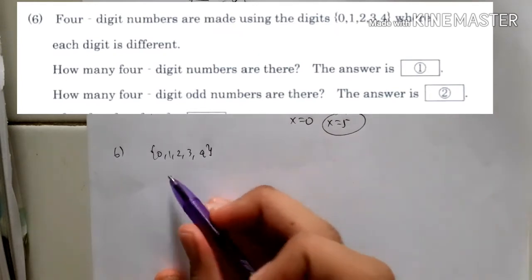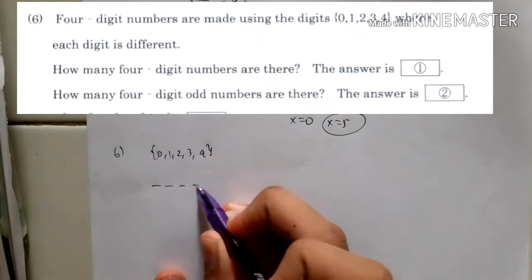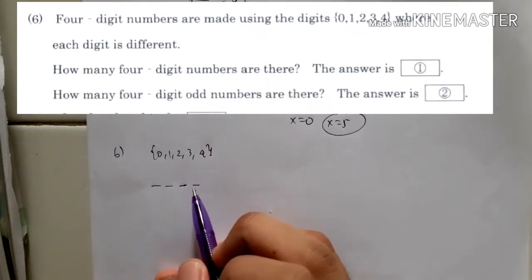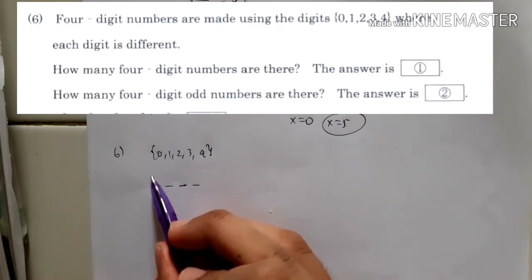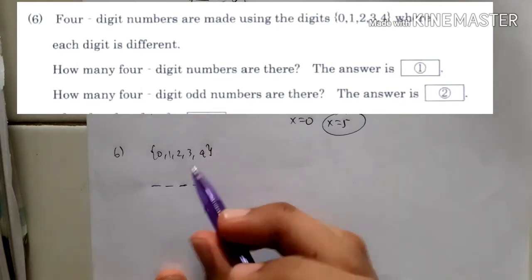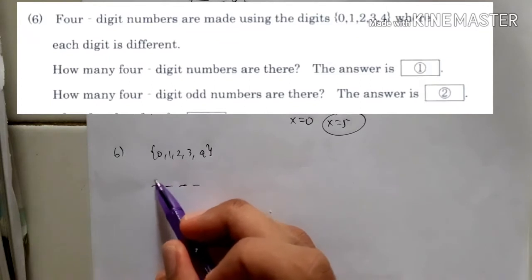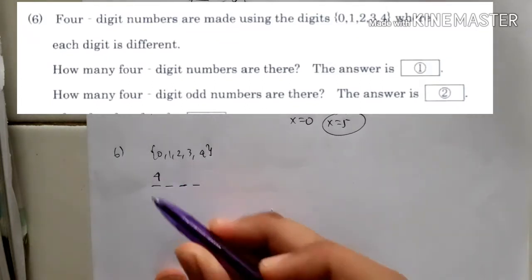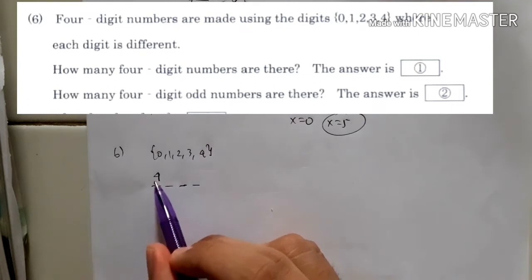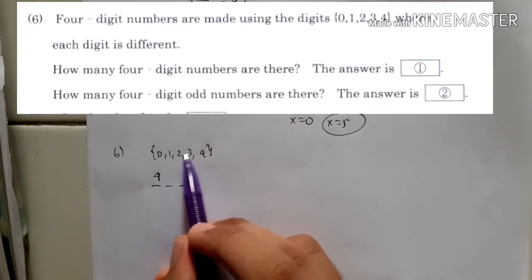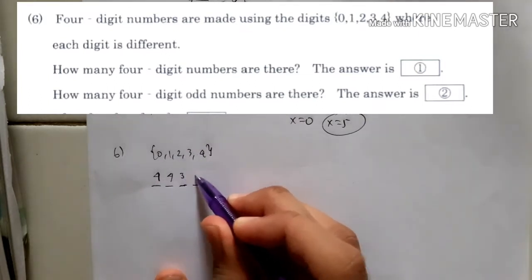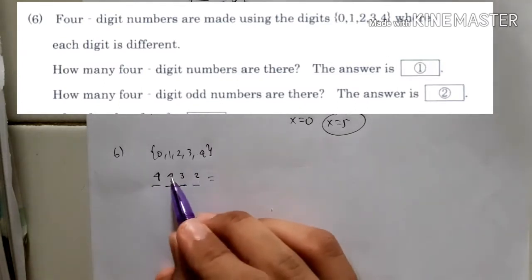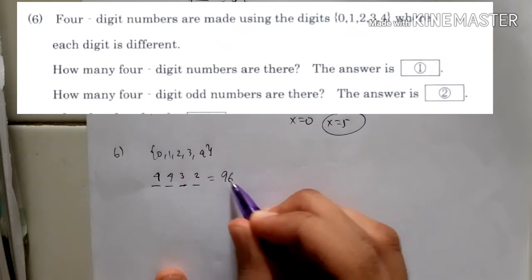You have to make 4 digits, and you know that in a 4-digit number you can't have 0 in front. So for the first digit you can only use 1, 2, 3, or 4 — that gives 4 choices. Then one number is taken, so you have 4 remaining choices for the second digit, times 3 times 2. So 4 times 4 times 3 times 2 equals 96 numbers.